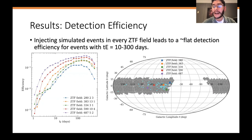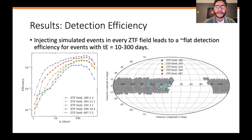Here we quantify the efficiency of our discovery algorithm. On the right, you're seeing all of the events we discovered as a function of coordinates. On the left, you're seeing the efficiency curves for a couple of ZTF fields. The efficiency is the ratio of observed events picked by our algorithm over the number of injected events simulated into ZTF data. On the whole, we're able to pick out events roughly uniformly between 10 and 300 days, but for events longer or shorter than this, the efficiency drops because it's difficult to detect those events in the data.